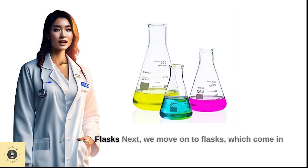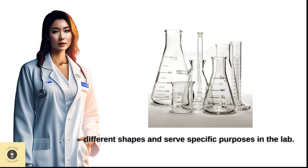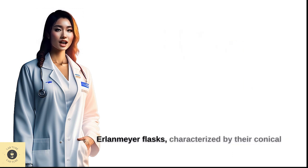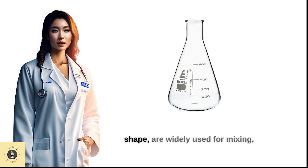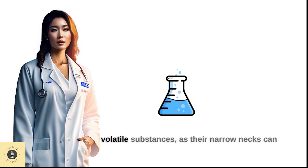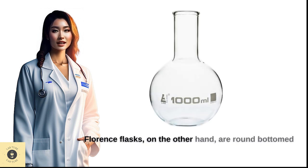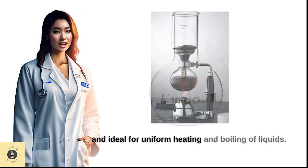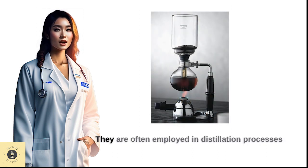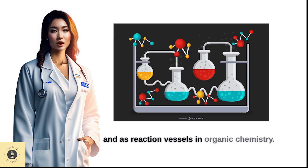Next we move on to flasks, which come in different shapes and serve specific purposes in the lab. Erlenmeyer flasks, characterized by their conical shape, are widely used for mixing, swirling, and heating liquids. They are particularly useful for reactions involving volatile substances, as their narrow necks can prevent the escape of vapors. Florence flasks, on the other hand, are round-bottomed and ideal for uniform heating and boiling of liquids. They are often employed in distillation processes and as reaction vessels in organic chemistry.